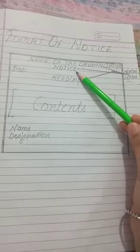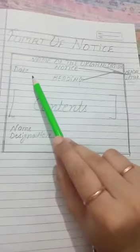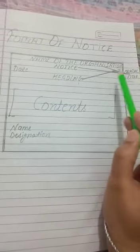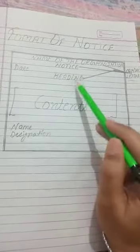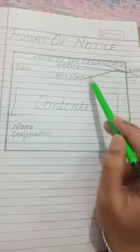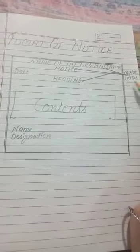On the top, we will write the name of the organization or school. Below that comes the word NOTICE. Then comes the date and then the heading. I have drawn lines here for these three things — name of organization, NOTICE, and heading — because all three have to be written in capital letters without leaving any line.